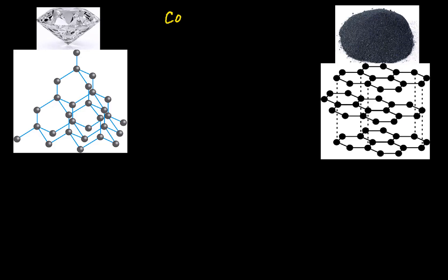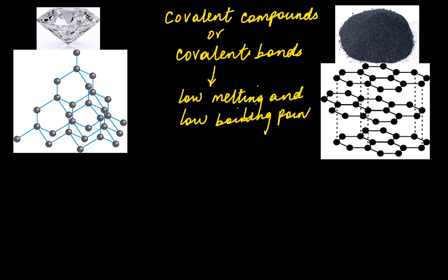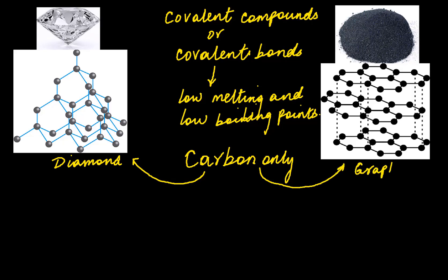When you talk about covalent compounds or covalent bonds, you learned that these compounds have low melting and low boiling points. But when it comes to diamond and graphite, these are not compounds — they are made up of pure carbon only. The property by which one element exists in two or more different forms is called allotropism, and these are called allotropes of carbon.